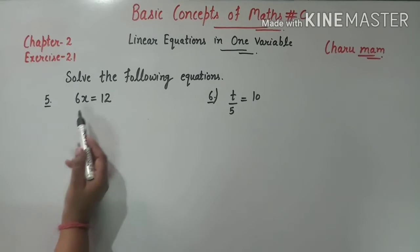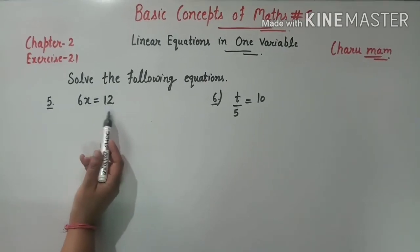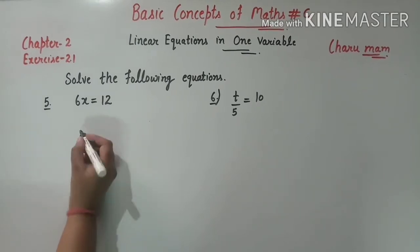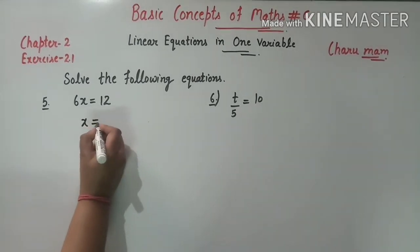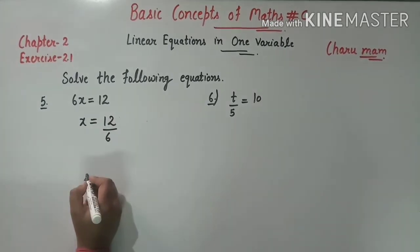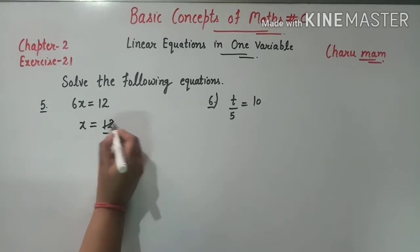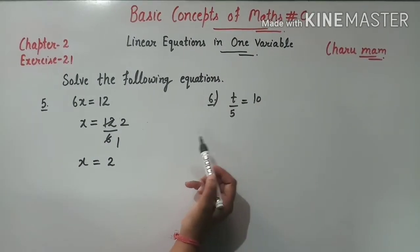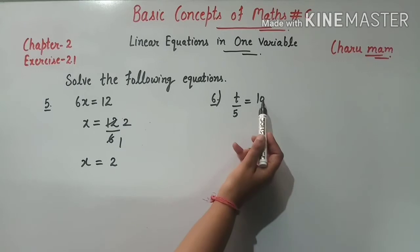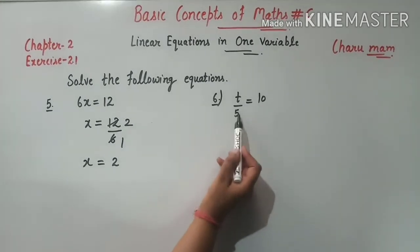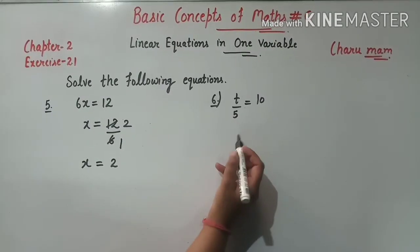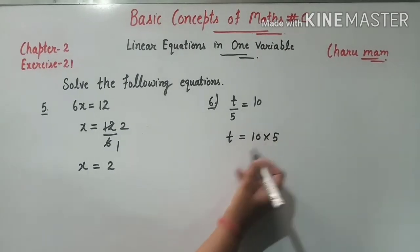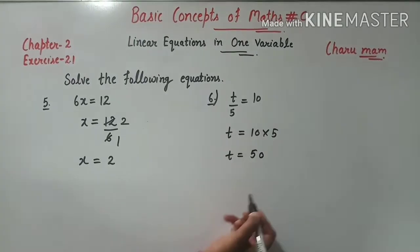Question 5: 6x equals 12. 6 और x multiply में है, तो 6 right side जाएगा divide में. Simplify: 6÷6=1, 12÷6=2, so x की value है 2. Question 6: t upon 5 equals 10. 5, t की divide में है तो right side multiply में हो जाएगा: t = 10 × 5 = 50.